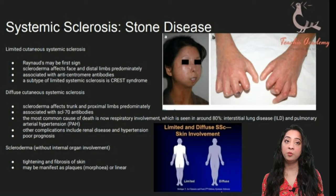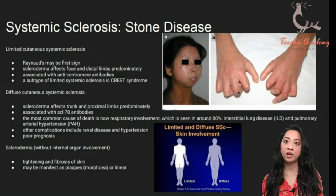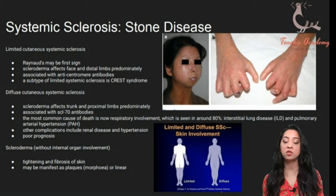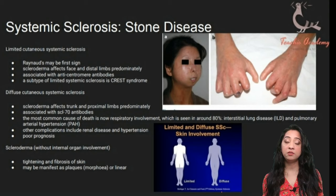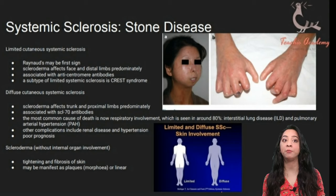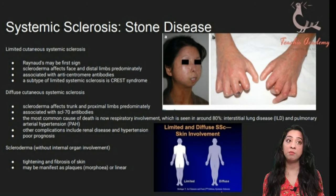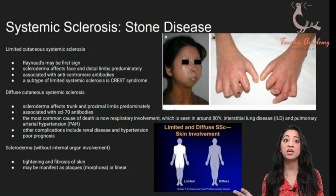Systemic sclerosis can be divided into three types. First is scleroderma — just skin involvement with increased collagen. The other two are diffuse cutaneous systemic sclerosis and limited cutaneous systemic sclerosis. Limited cutaneous systemic sclerosis involves sclerosis up to the elbows — facial and distal limb involvement. Raynaud's phenomenon, which is vasospasm of the arteries of the hand related to cold, may be the first sign. Limited cutaneous systemic sclerosis is associated with anti-centromere antibodies — very important for your PLAB 1 exam.